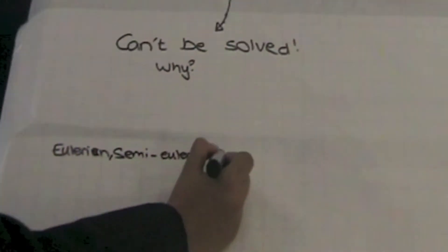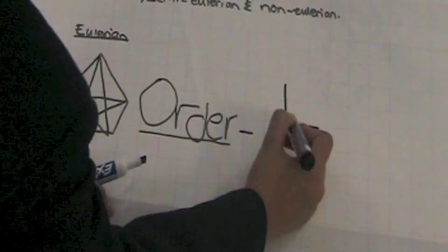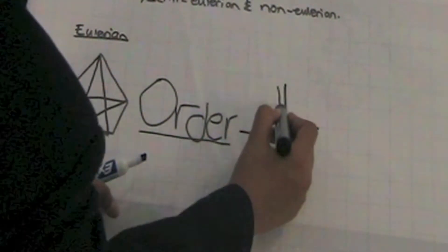We need to look at what makes a graph Eulerian, Semi-Eulerian and Non-Eulerian. This is to do with the order of the vertices. Why is this shape Eulerian? Let's look at the order. The order of a vertex is the amount of edges coming from it. So this vertex would have an order of two.